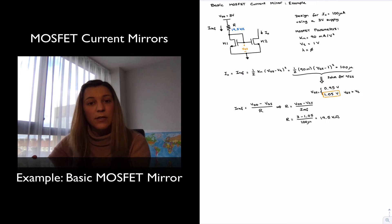And that's it. I have designed my current mirror to have an output current of 100 microamps from a VDD supply of 3 volts. This is an example of a design problem. Notice that I could have done the opposite problem if I were given the resistor value. I could have calculated my output current based on that particular circuit. That would be an analysis problem.